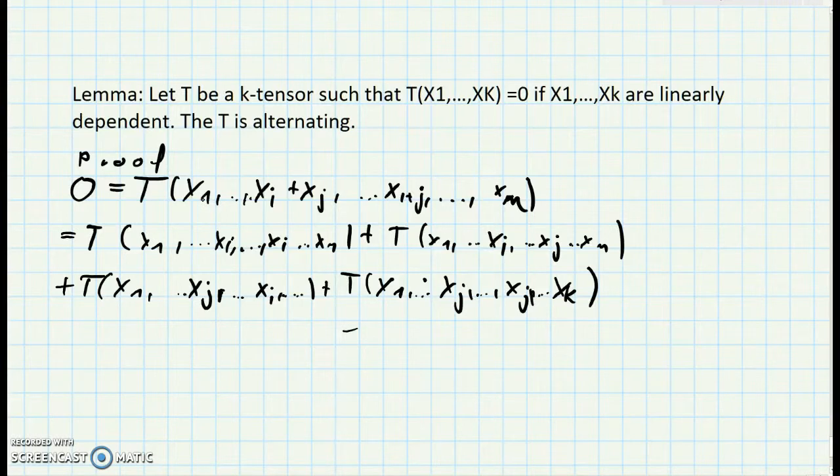Let's look at a tuple of vectors X1 to Xk where in the i-th position we have the sum Xi plus Xj, and in the j-th position we have also Xi plus Xj.